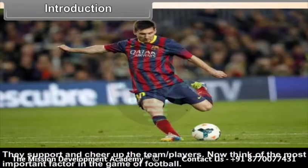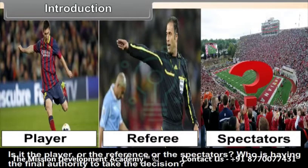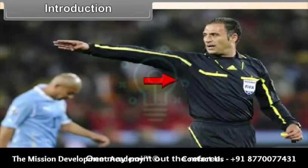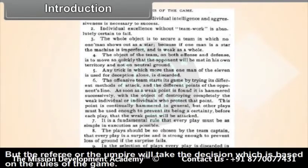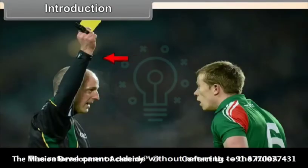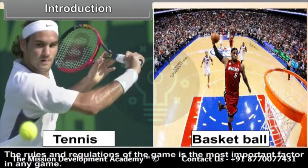Think of the most important factor in the game of football. Is it the player, the referee, or the spectators? Who has the final authority to take the decision? One may point out the referee. But the referee will take decisions based on the rules of the game — the referee cannot decide without referring to the rules. The rules and regulations of the game are the most important factor.